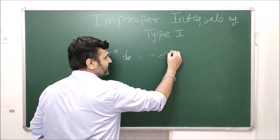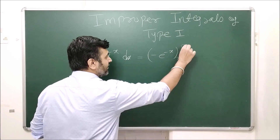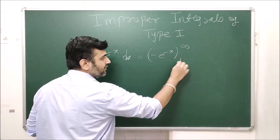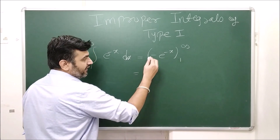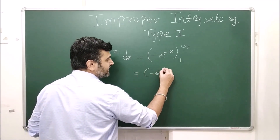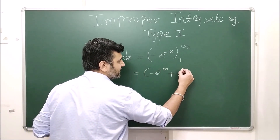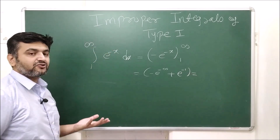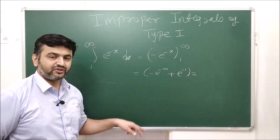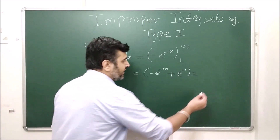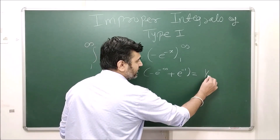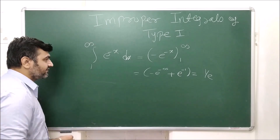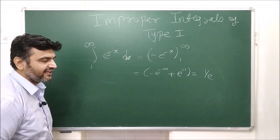They know the antiderivative is −e^(−x), so they write it from 1 to infinity. They compute this as e^(−∞) − (−e^(−1)), and then say e^(−∞) is 1 over e^∞, which is 0, so the answer is e^(−1).